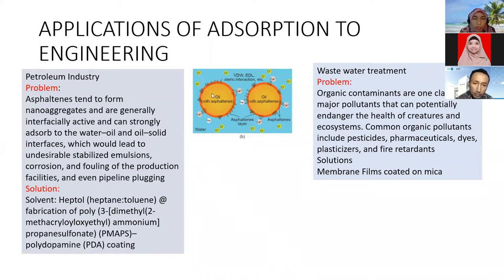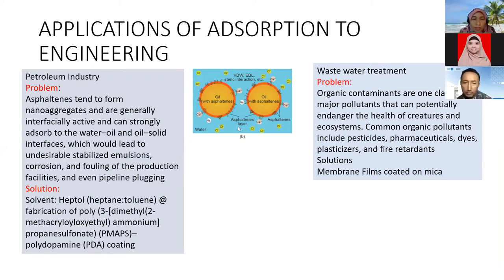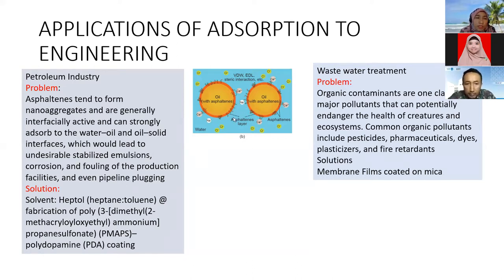This mixture would lead to undesirable stabilized emulsions, corrosion, fouling of production facilities, and even pipeline plugging. In offshore petroleum operations, we're dealing with surrounding seawater and brine — salt that dissociates into sodium ions and chloride ions — which binds to the surface of this emulsion. The goal is to reduce the emulsification of oil and asphaltenes. The solution involves using a solvent, because solvents interact with hydrophobic and hydrophilic surfaces based on the 'like dissolves like' principle.